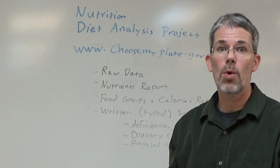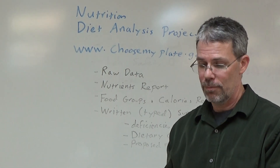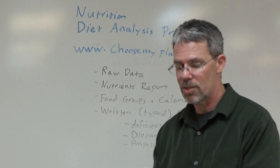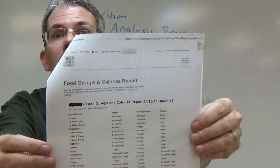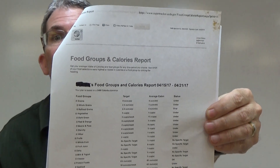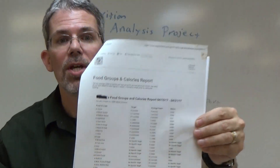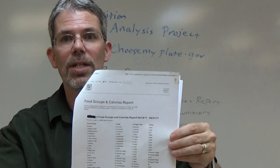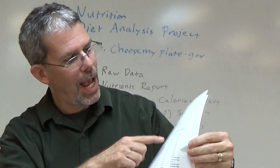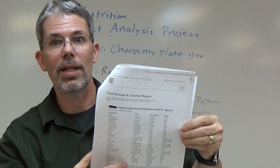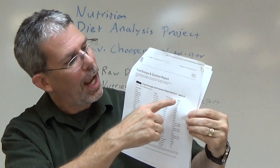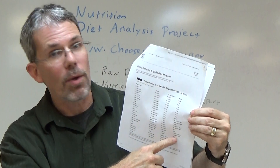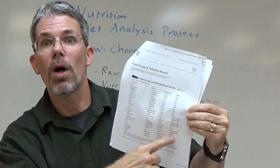The food groups and calories report is going to look similar, but instead of listing nutrients it's going to list food groups and calories. Again you have the list of the food groups, then it has the target — what you're supposed to be getting — what you are getting, and whether it is okay, over, or under.